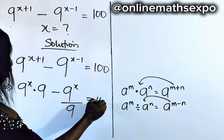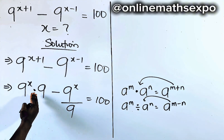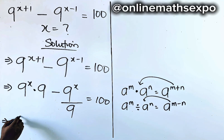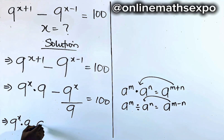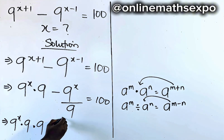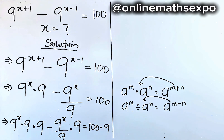What do you think we should do next? Let's clear this 9 at the denominator. To do that, we multiply each part by 9. So we have 9 to the power of x multiplied by 9, then multiply by another 9 to clear this, minus 9 to the power of x divided by 9, also multiply by 9, is equal to 100 multiplied by 9.